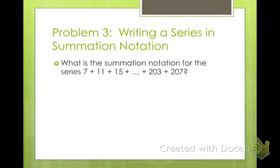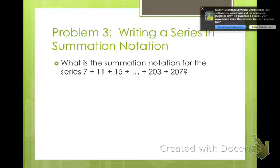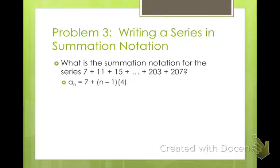Let's write a series in summation notation. Here's my series: 7 plus 11 plus 15 all the way to 203 plus 207. In order to write our summation, first we need to write an explicit formula. We need to use our a sub n equals a sub 1 plus n minus 1 times d. Our a sub 1, our first term is 7, plus n minus 1, and our common difference is 4. If we simplified this, you multiply, you get 4n minus 4, and then 7 minus 4 is 3. So 4n plus 3 is our formula for finding the nth term.